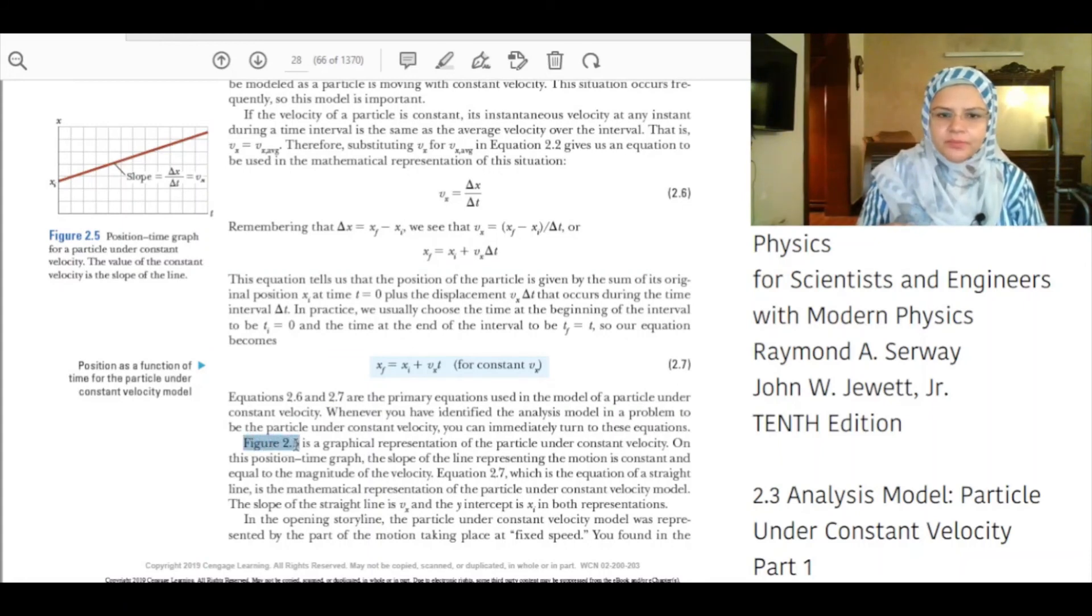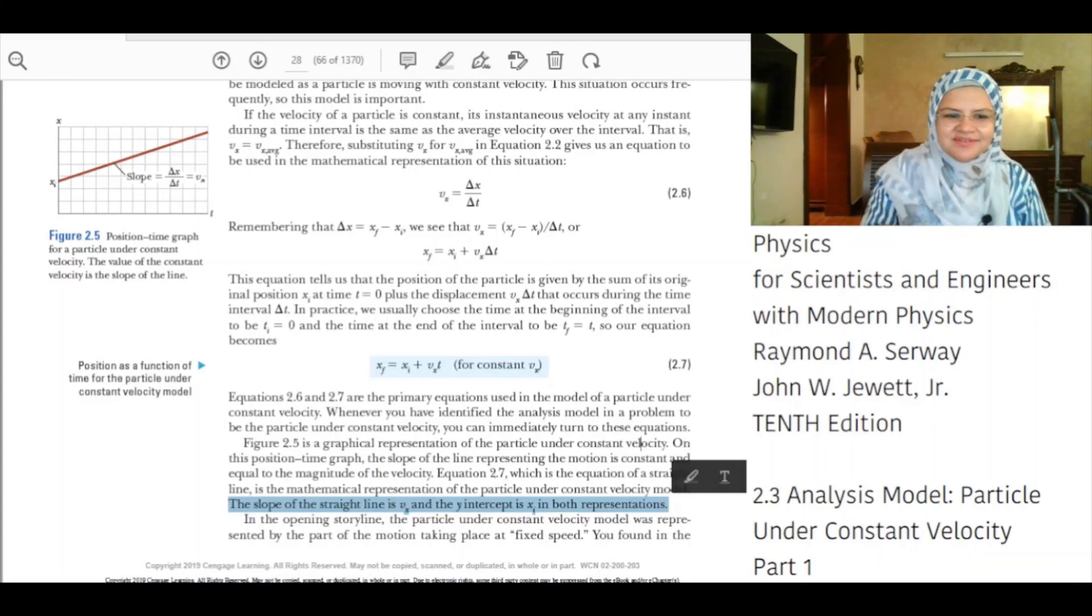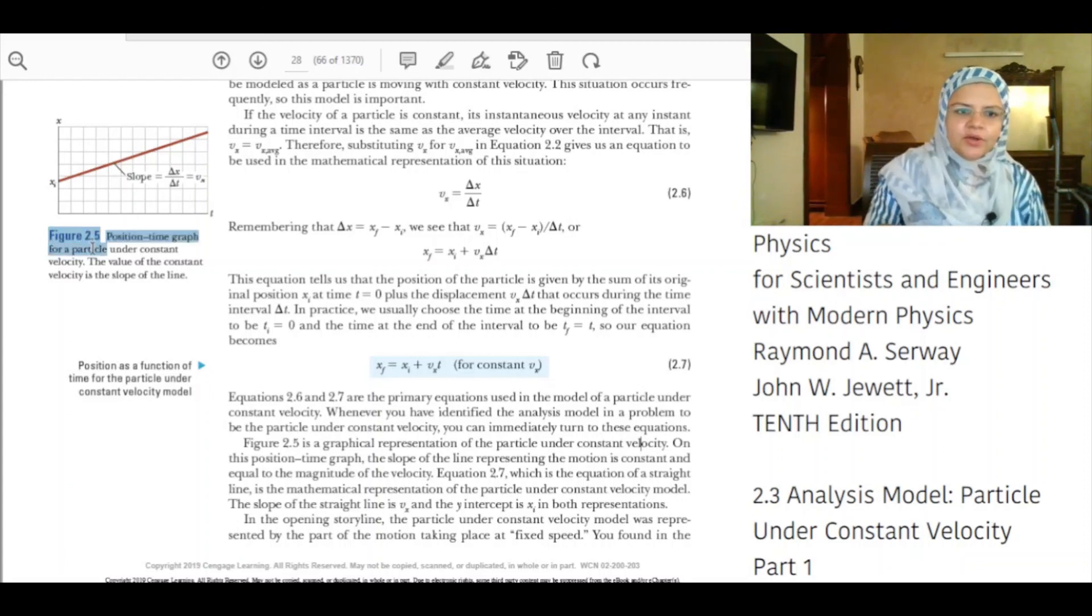Figure 2.5 is a graphical representation of a particle under constant velocity. On this position-time graph, the slope of the line representing the motion is constant and is equal to the magnitude of the velocity. Equation 2.7, which is the equation of a straight line, is a mathematical representation of the particle under constant velocity model. The slope of the straight line is Vx and the y-intercept is xi in both representations. Figure 2.5, position-time graph for a particle under constant velocity. The value of the constant velocity is the slope of the line.